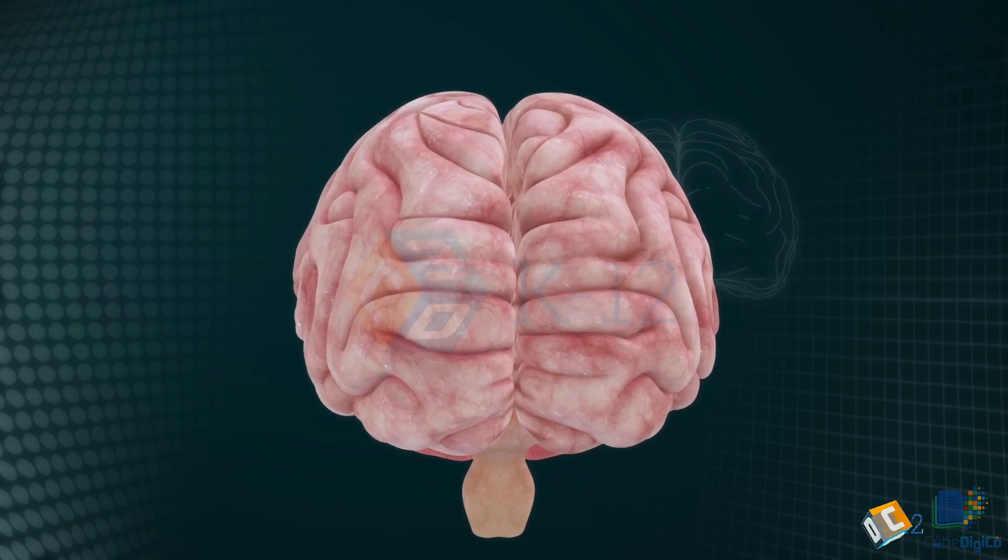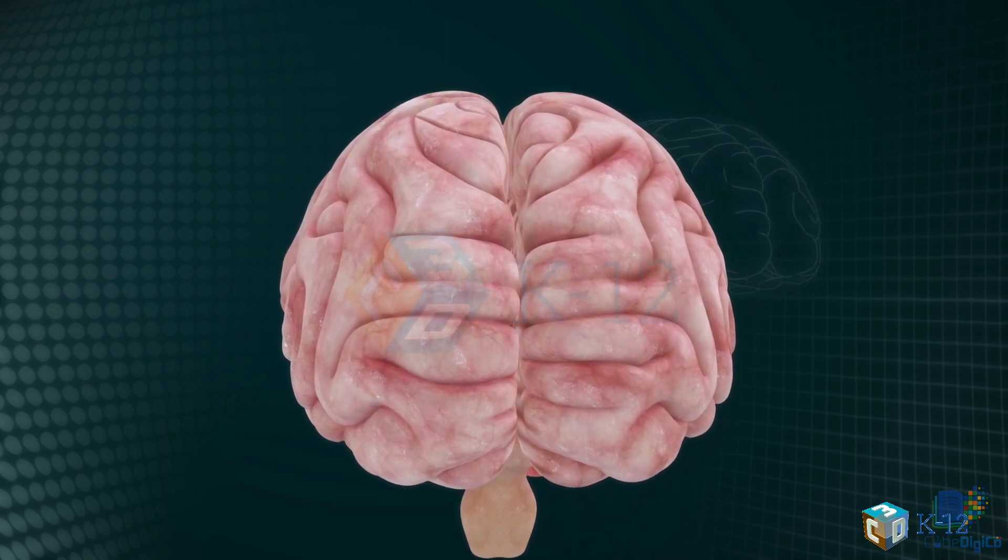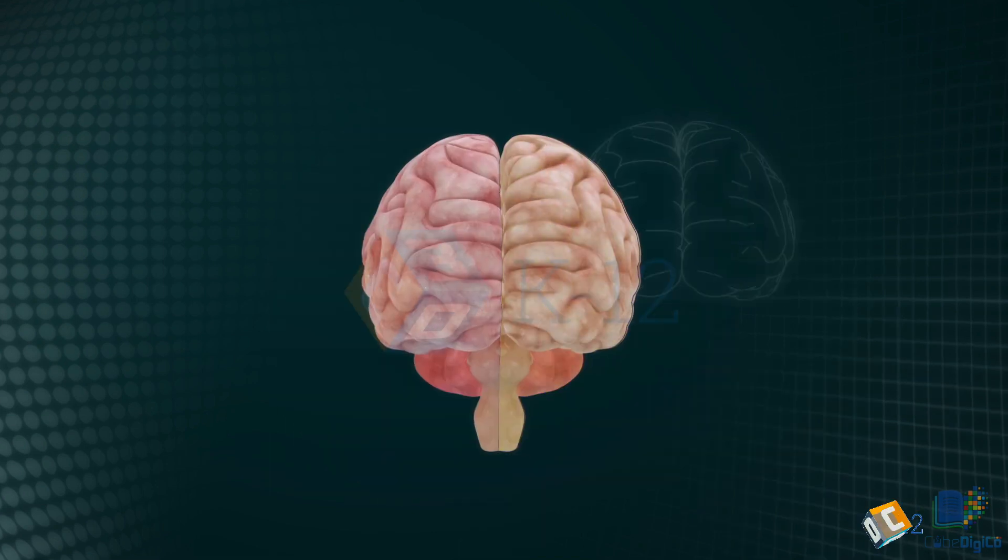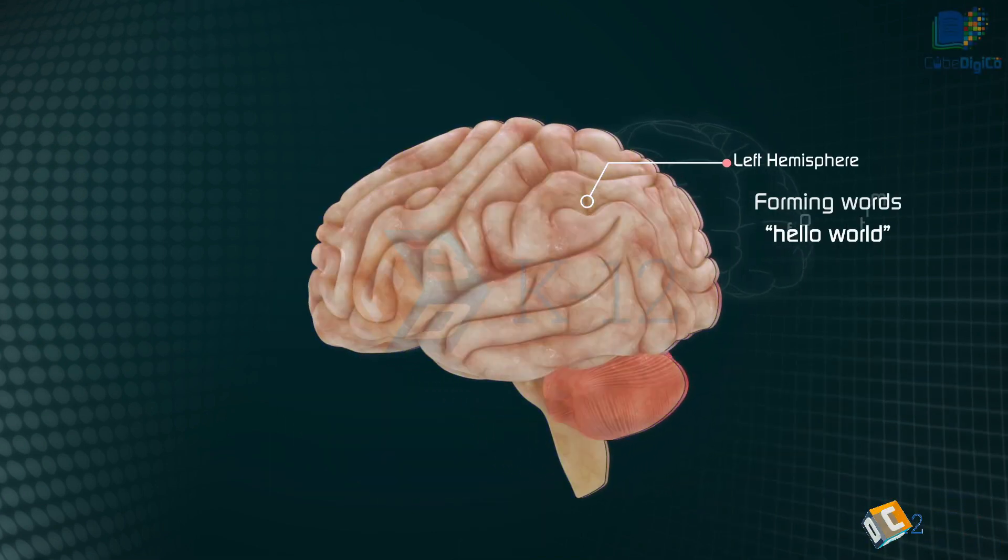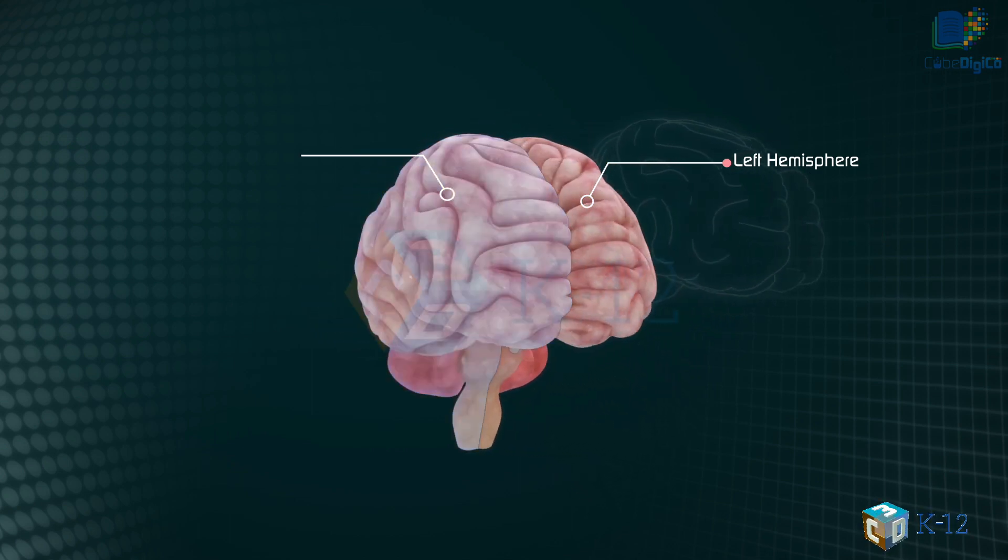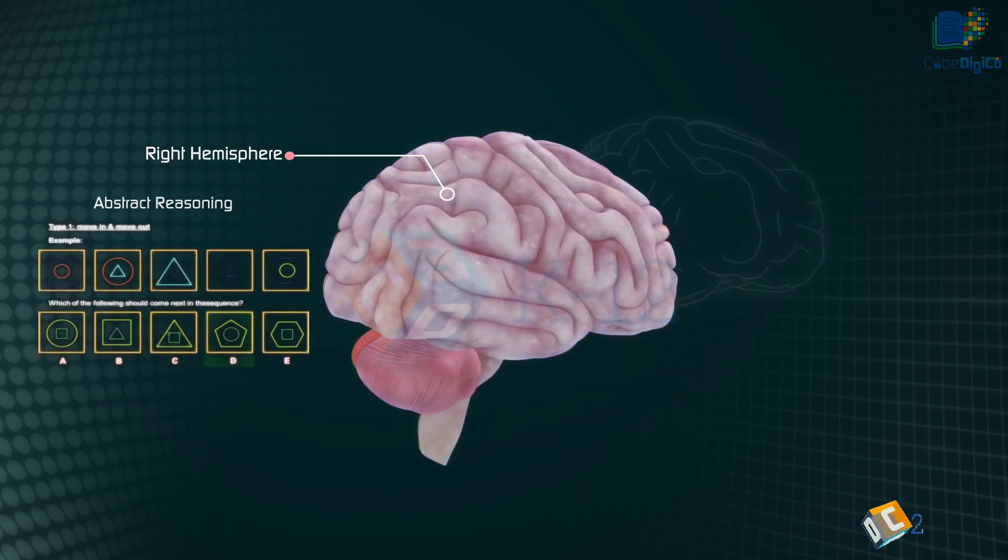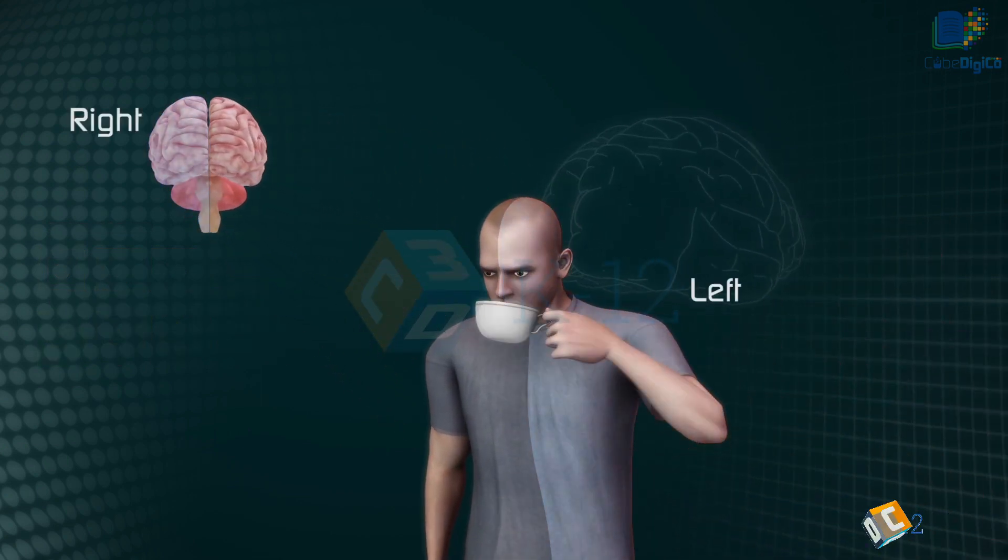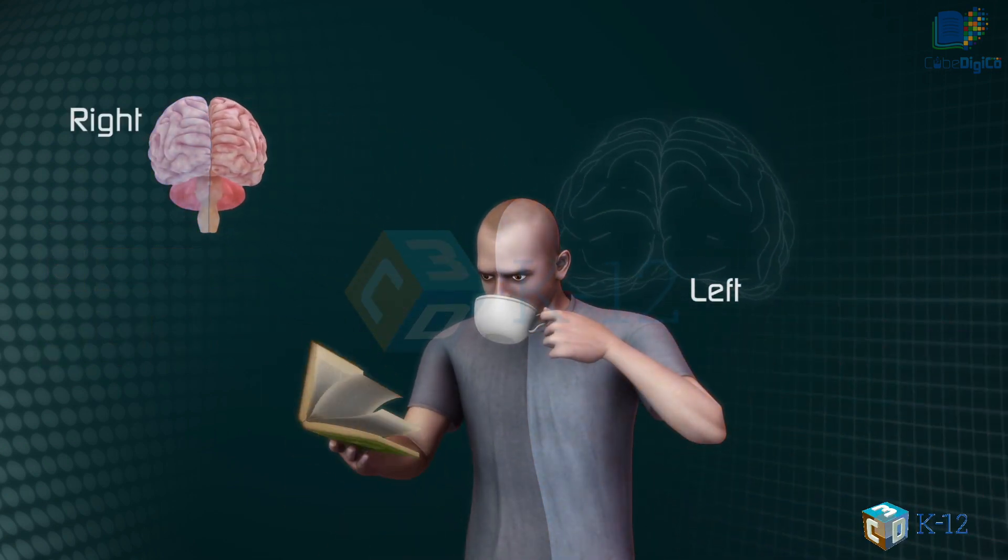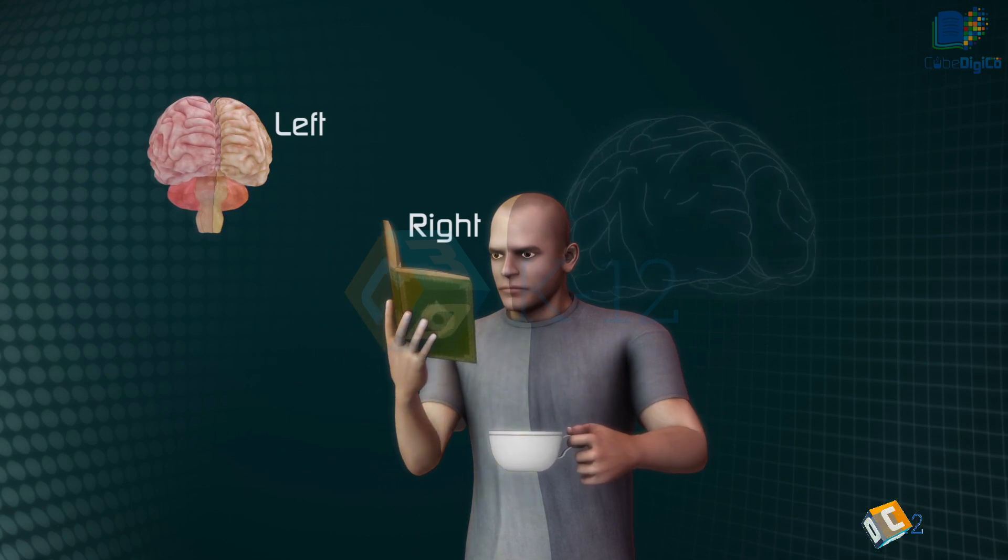Although the two hemispheres seem to be mirror images of each other, they are different. For instance, the ability to form words seems to lie primarily in the left hemisphere, while the right hemisphere seems to control many abstract reasoning skills. The right cerebral hemisphere primarily controls the left side of the body, and the left hemisphere primarily controls the right side.